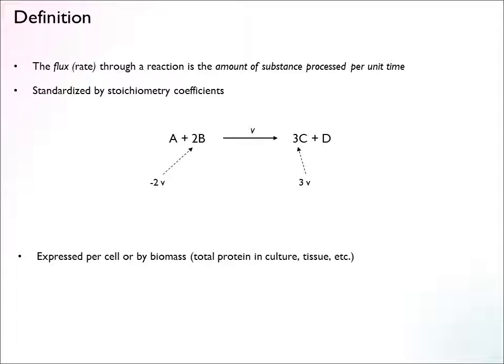Normally we express fluxes per cell, or we can express it by biomass — for example per total protein in the culture. It depends on experimental conditions, what kind of measures you have, and what you're able to normalize to.